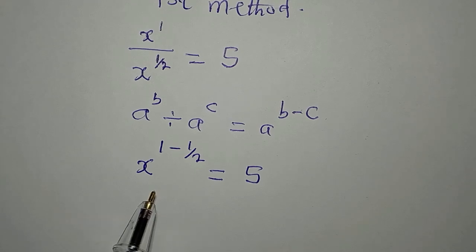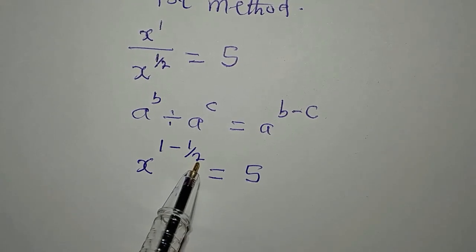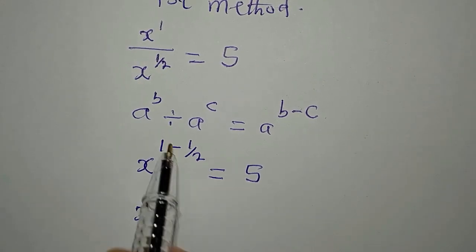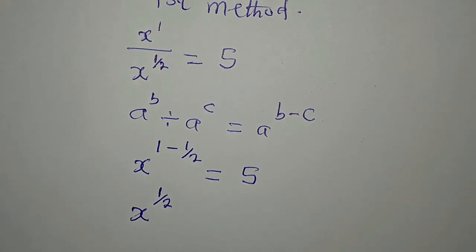But then, do not make a mistake. This one here is bigger than 1 over 2. So 1 minus 1 over 2 is 1 over 2. So this will now be equal to 5.